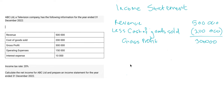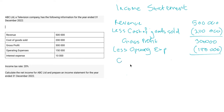After this, we have to subtract your operating expenses so that we can get your operating income. In this case, your operating expenses is $150,000, and then with that we get your operating income of $150,000.